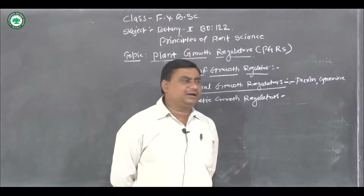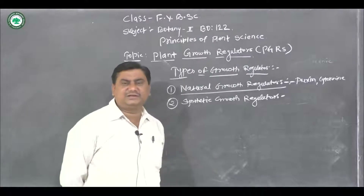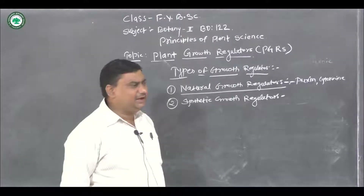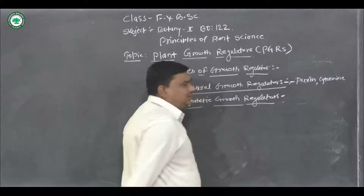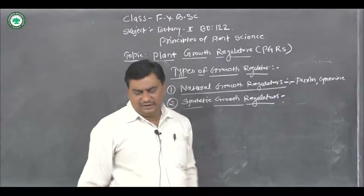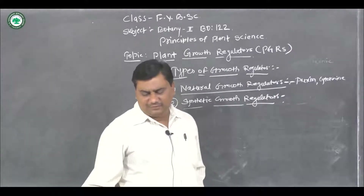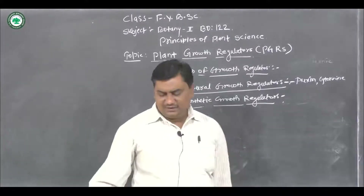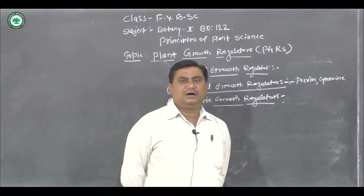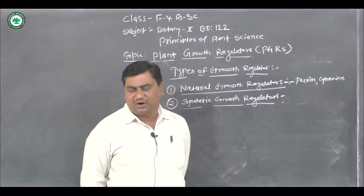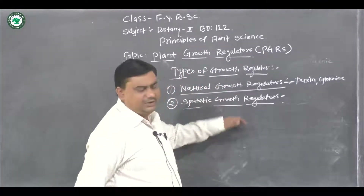Synthetic growth regulators are synthesized at a commercial level. Examples include morphactins, malformins, maleic hydrazide, etc. So there are two types of growth regulators: natural and synthetic.